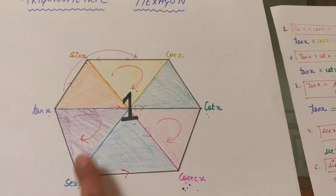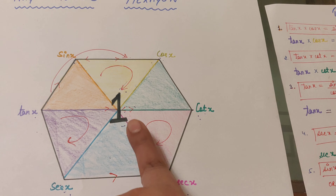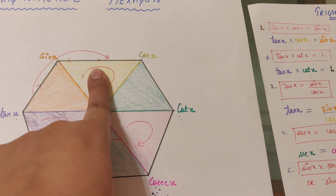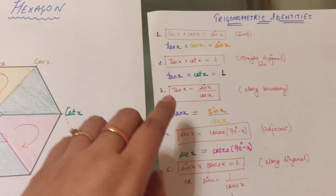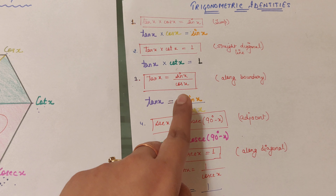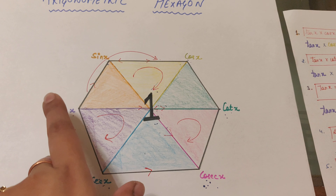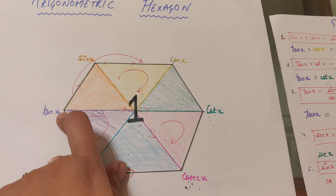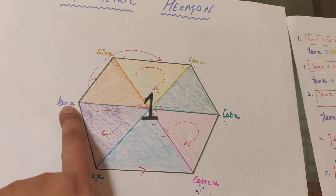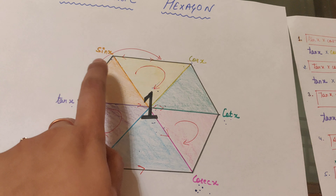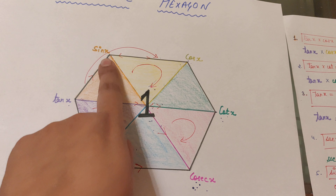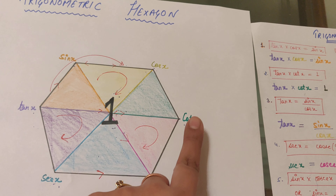Similarly, the next vertex: sin x · cos x = cos x — just jump over the function. Next, cos x · cos x = cot x, so jumping over the function gives you the middle function. This is the first identity.